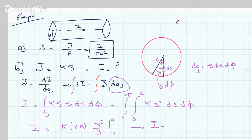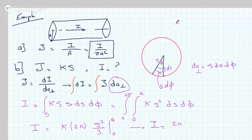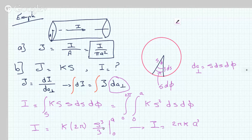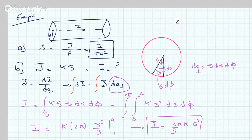That means the 0 will just zero this out the lower bound, and the upper bound will end up with 2πK A³ over 3. This would be the total current in the wire. That does it for this question. Please don't forget to like, comment, and subscribe.